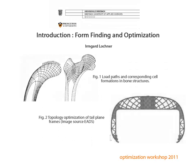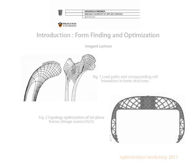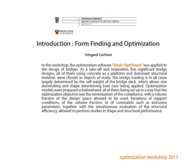However, it is the context of structural shape and structural performance, as an essential part of the design of structures, that can be induced as a determining contribution into the design process. Various structural and aesthetical inspirations can be gathered from studies using structural optimization. In this workshop, the optimization software Altair OptiStruct was applied to the design of bridges. As a take-off and inspiration, five significant bridge designs, all of them using concrete as a platform and dominant structural material, were chosen as objects of study. The bridge loading is in all cases largely determined by the self-weight of the bridge deck, which allows one dominating and shape-determining load case to be applied.